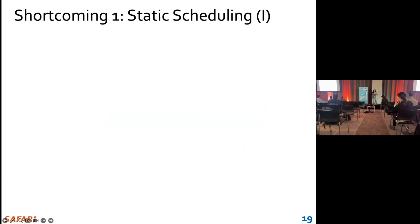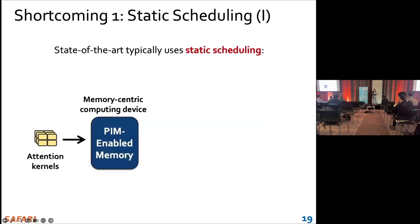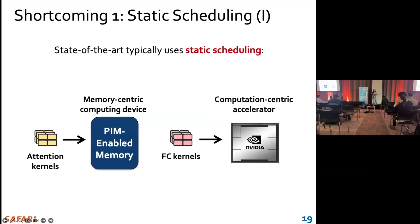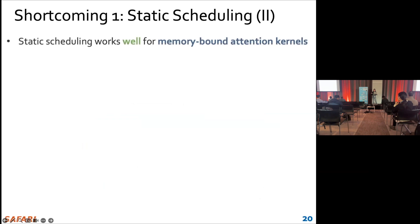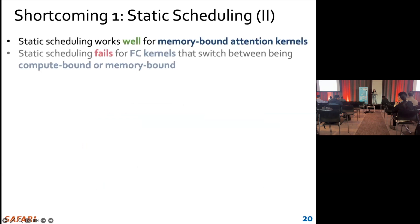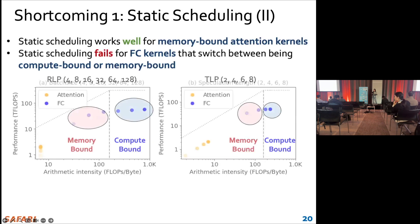As we just mentioned, the state-of-the-art typically uses static scheduling, which maps all the attention kernels to the memory-centric device and all the FC kernels to the computation-centric device. That can be good for memory-bound attention kernels. However, it fails for FC kernels that switch between memory-bound and compute-bound, as our roofline model shows.